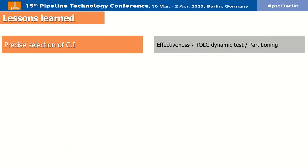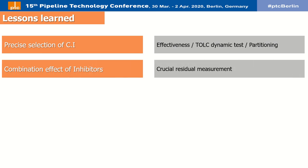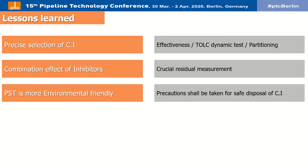Moreover, each batch of corrosion inhibitor must be precisely tested for effectiveness and partitioning. Most importantly, corrosion inhibitors and hydrate inhibitors may have adverse effects on each other, producing undesirable polymeric byproducts such as heavy compounds of paraffin or olefin, which leads to a drastic reduction in heat exchanger efficiency downstream. Consequently, stringent precautions are required to perform compatibility tests and to avoid injection beyond the recommended dosage to prevent sticky substances downstream.